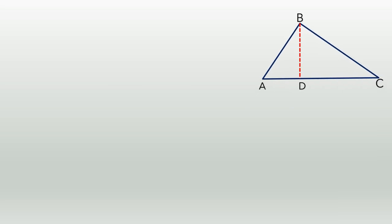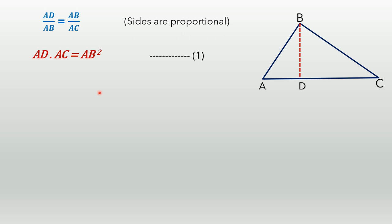Since these two triangles are similar, we will consider two ratios which involve the hypotenuse and common sides. Therefore, AD/AB = AB/AC. These are the sides proportional. On cross multiplication, we get AD × AC = AB × AB, that is AB². Let us consider this as equation number 1.